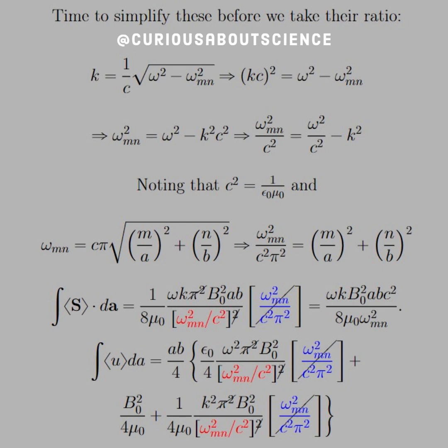You see from that, we can cancel a c squared and a omega squared mn from the red and the blue. And we can simplify that pretty quickly. And the pi squared from what was there in the coefficients or constants.